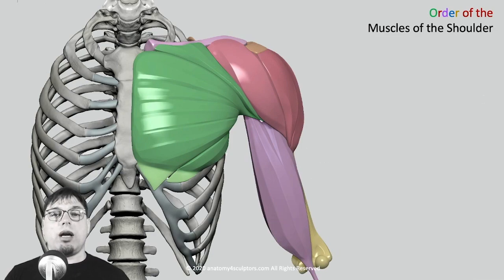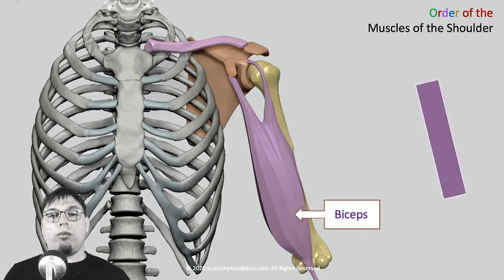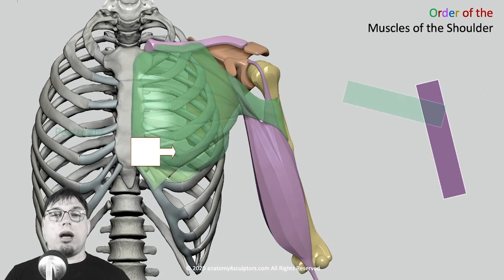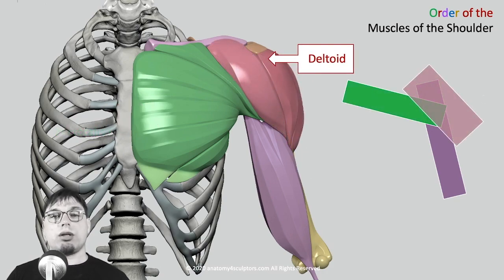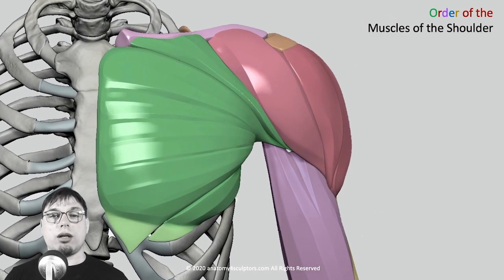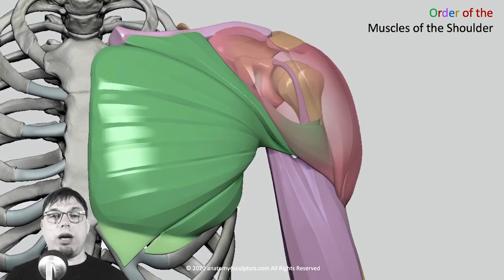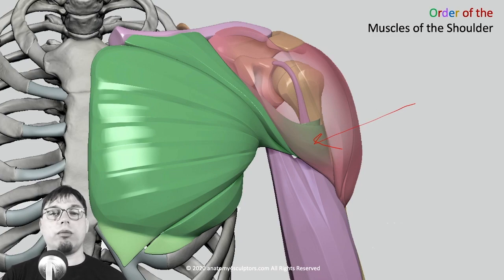Now let's talk about the order of the shoulder muscles. The biceps is located along the humerus and inserts into the scapula at the glenoid fossa and the coracoid process. On top of it comes the pectoralis major, the greater chest muscle, which covers the biceps. The deltoid muscle then covers both the pectoralis major and the biceps brachii.